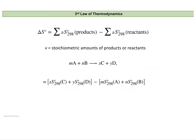This idea of standard entropies leads us to an equation similar to what we did with enthalpy. We can calculate the change in standard entropy by taking the sum of our products' standard entropies — multiplied by their stoichiometric coefficients — and subtracting the sum of our reactants' standard entropies, also taking into account their stoichiometric coefficients.